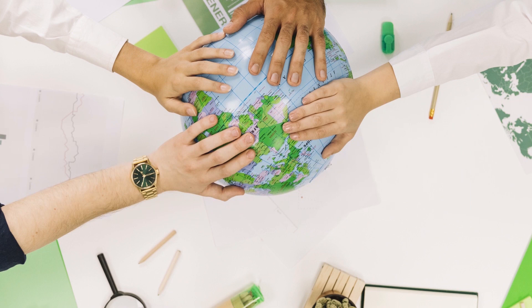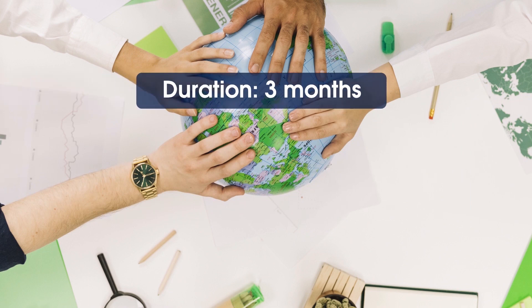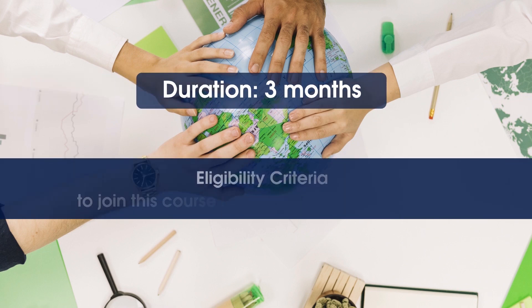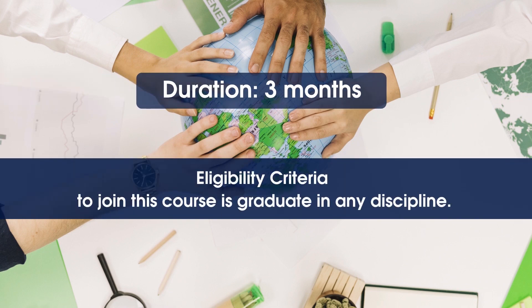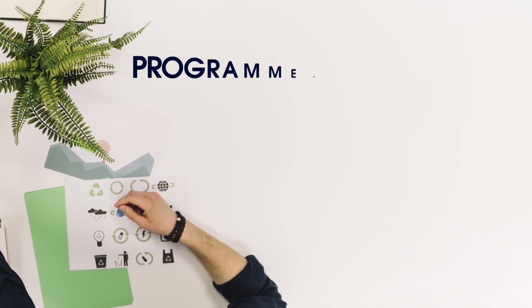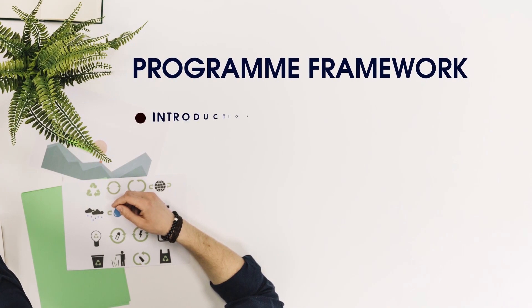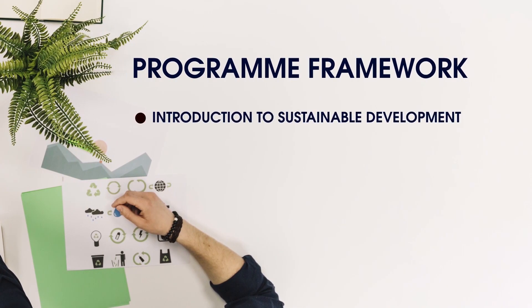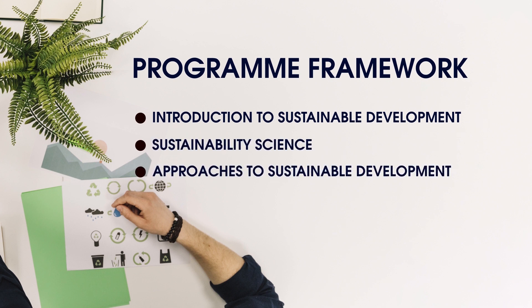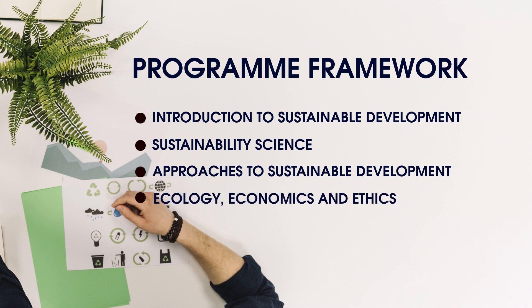The program duration is three months. The eligibility criteria to join this course is to be a graduate in any discipline. The basic framework of the course has four blocks: the first block is an introduction to sustainable development, the second block is on sustainability science, the third block is approach to sustainable development, and the fourth block is on ecology, economics and ethics.